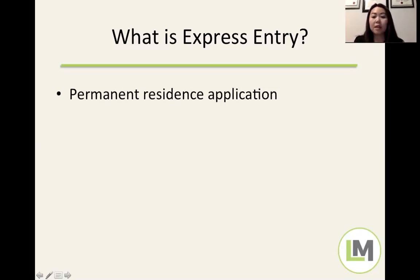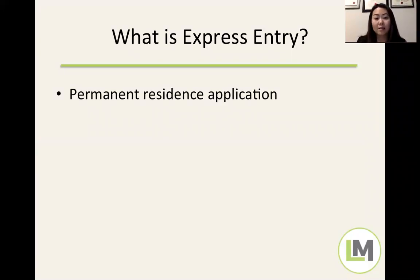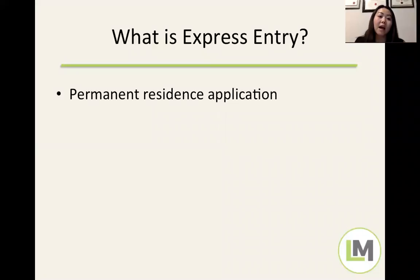Express Entry is a permanent residence application. When you apply, you are applying for permanent residence, which is the status that allows you to stay permanently in Canada, work anywhere you like, study anywhere you like — you're treated almost as a citizen except you can't vote. Under the new citizenship laws, you will only need to live in Canada for three years as a permanent resident before you can get citizenship.